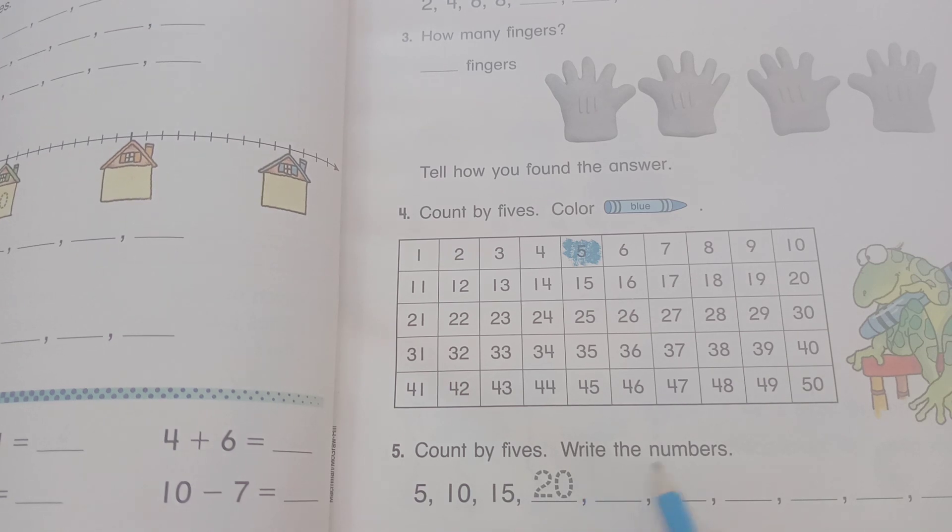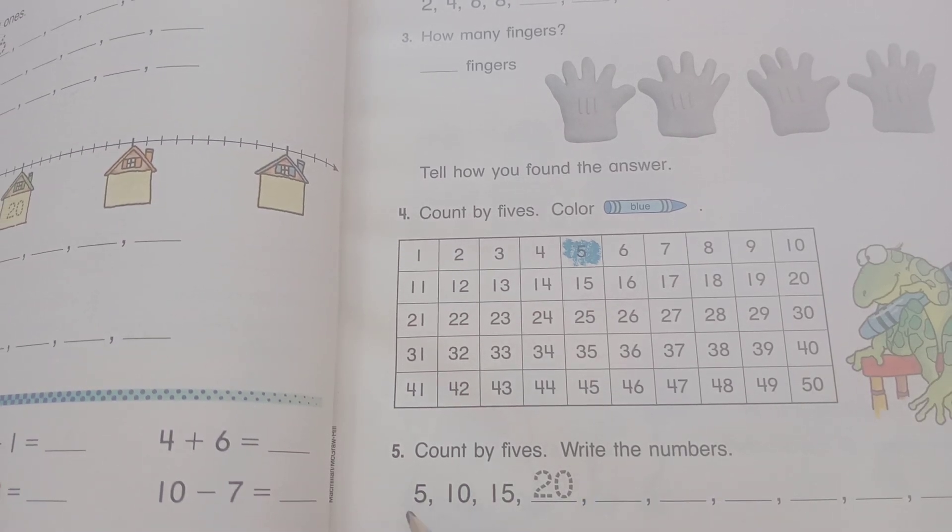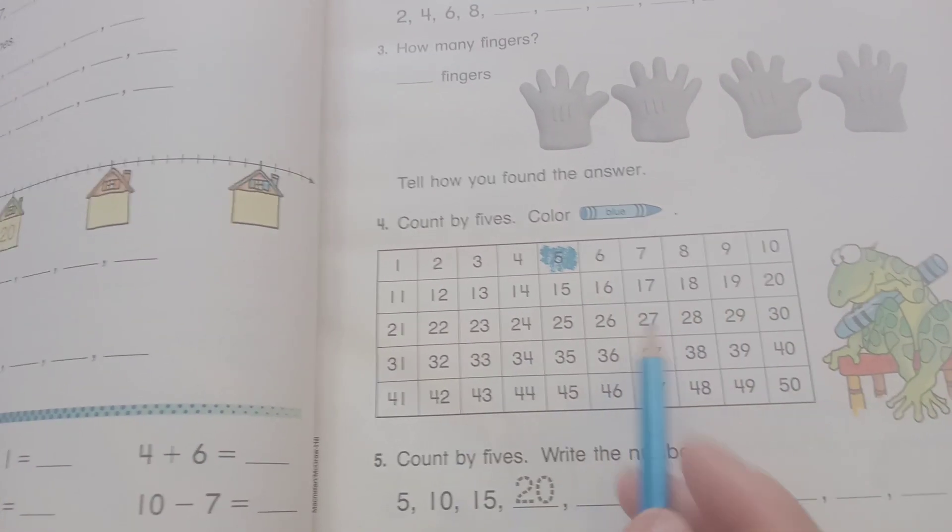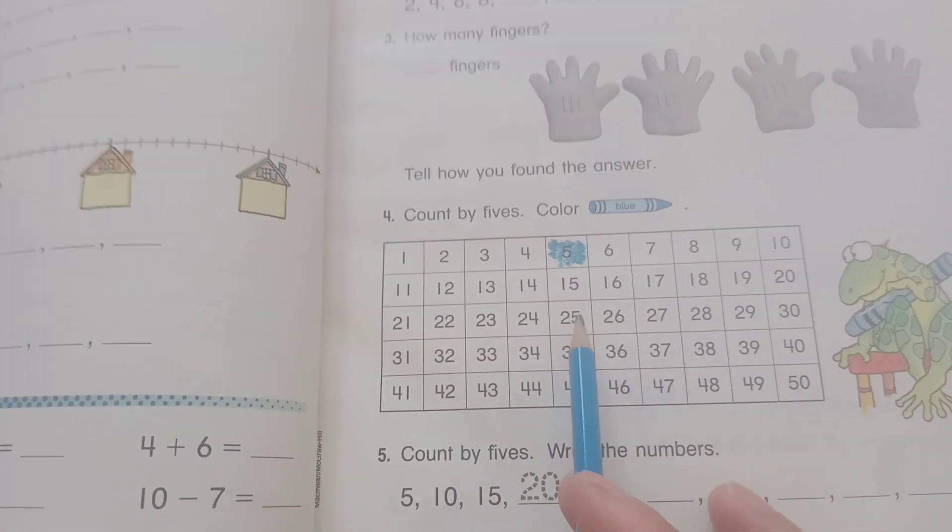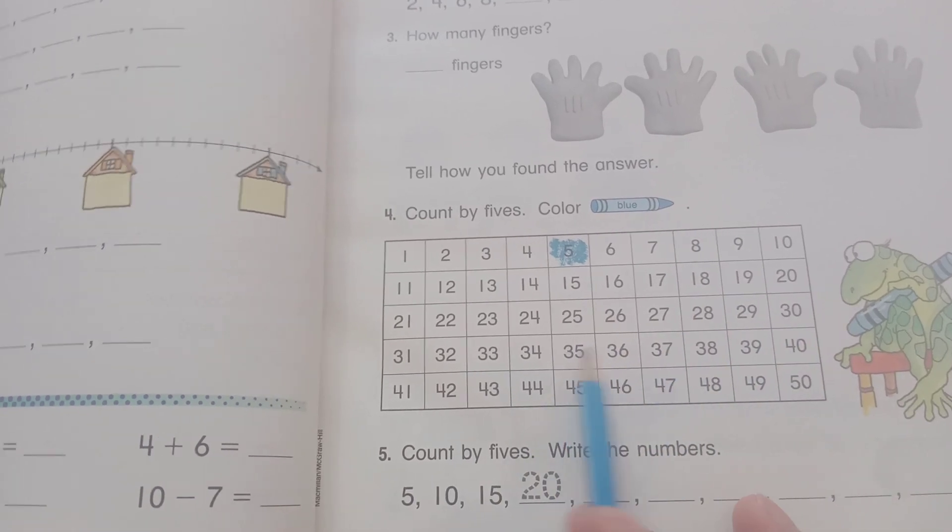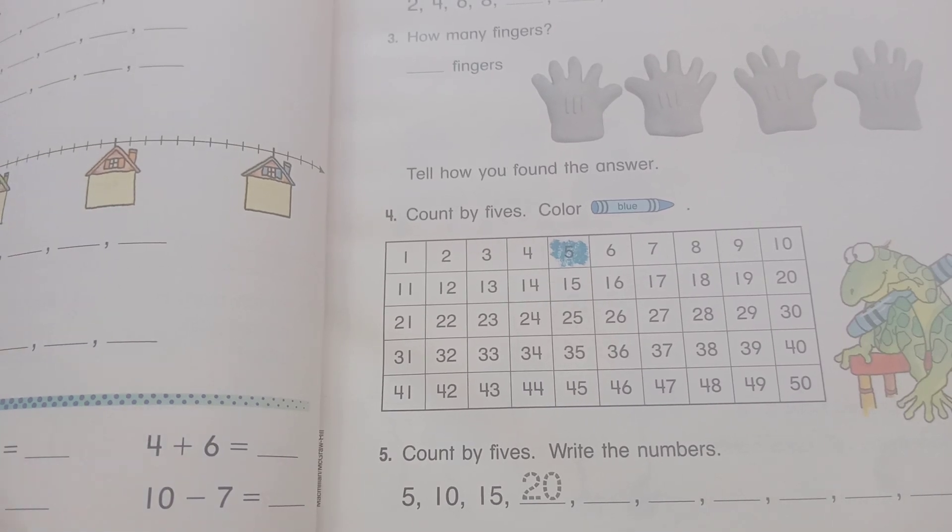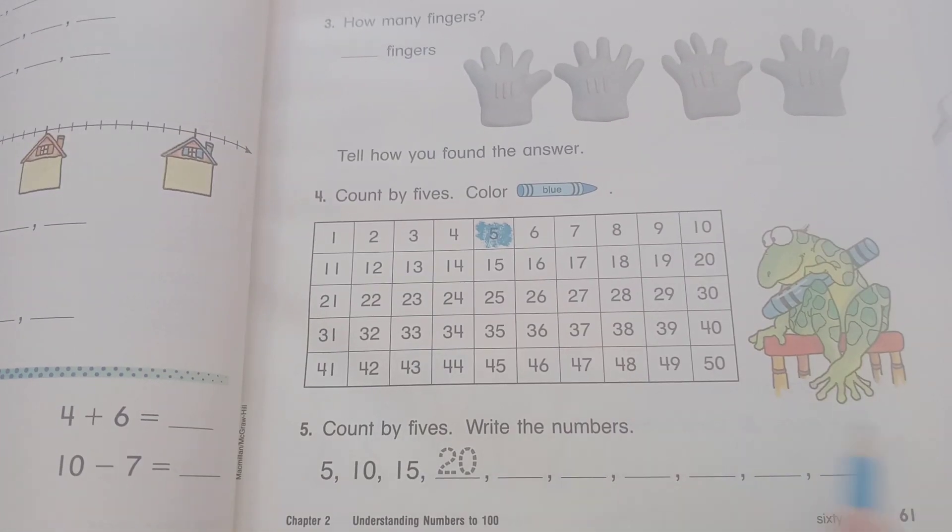So now count by five and write the numbers: five, ten, fifteen, twenty. Twenty-five, thirty, thirty-five, forty, forty-five, fifty. Okay, you can count and write down here. So write down here.